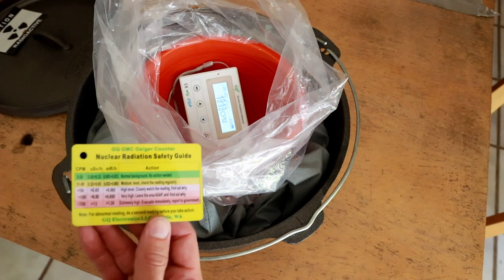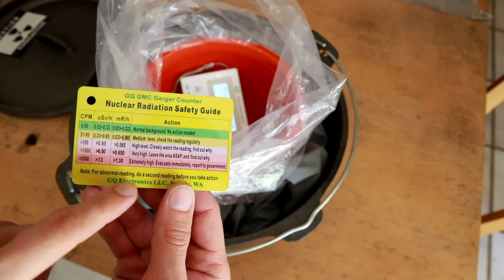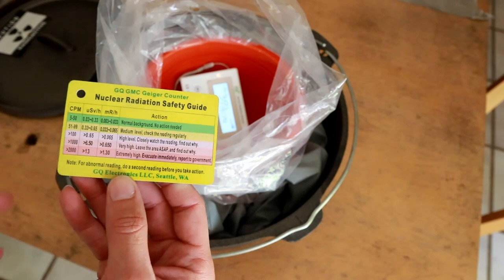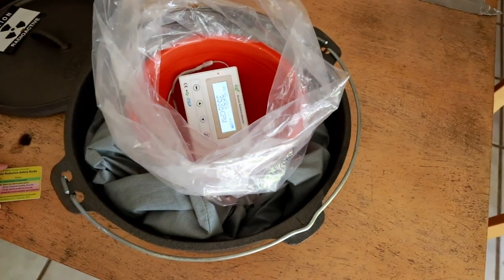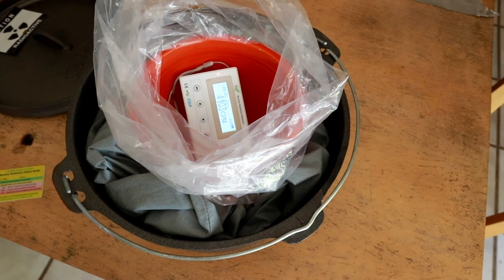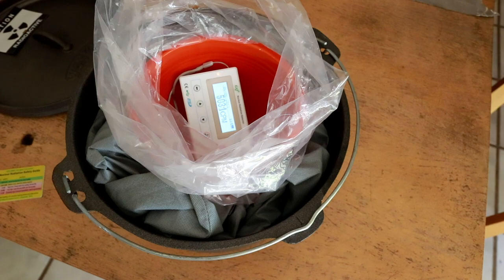Keep in mind this card. If we go past 2000, extremely high, evacuate immediately, report to government. Granted, this is for ambient radiation, so since this is not ambient, this is in the middle of the object, it's a little bit less of a concern. But it's still going up. We're at 44, 46, 47, 5,000 counts per minute and rising.